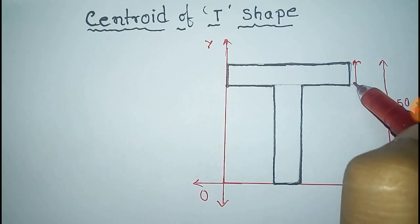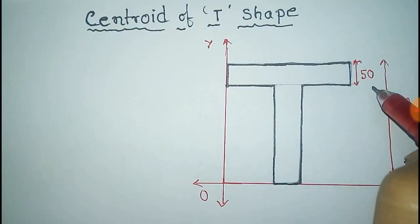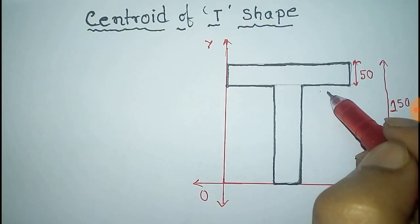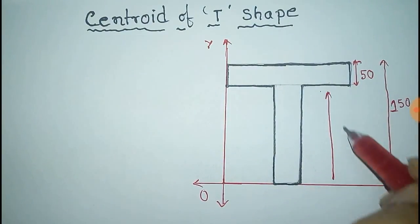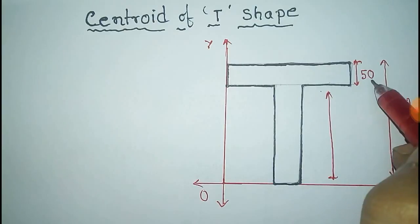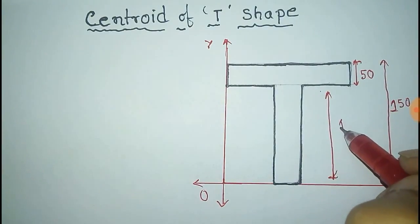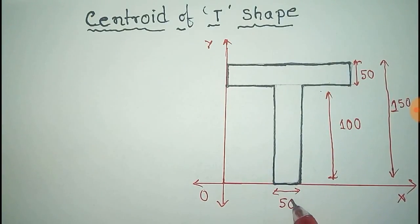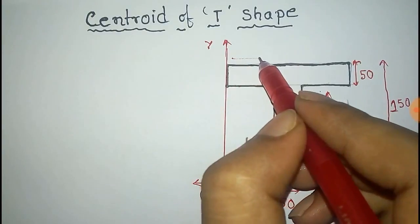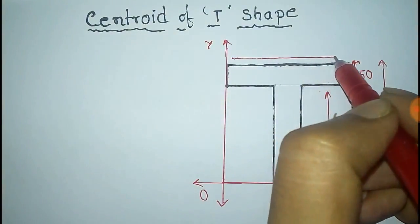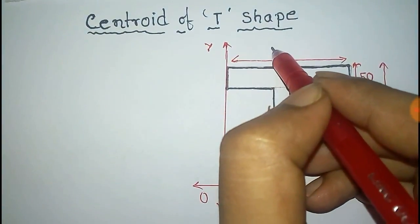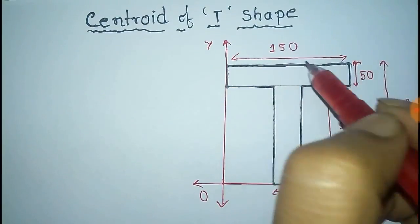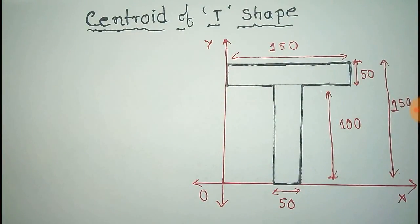This length is 150 minus 50, which equals 100 units. This is 50 units, and the total length of this is 150 units. To measure the centroid of this I-section, we have to divide it into two rectangles.